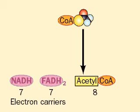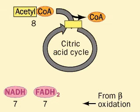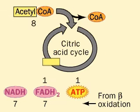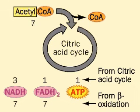Let's put the electron carriers aside for now and look at the fate of the acetyl-CoAs. Each acetyl-CoA enters the citric acid cycle, and each turn of the cycle produces three NADHs, one FADH2, and one ATP via GTP.